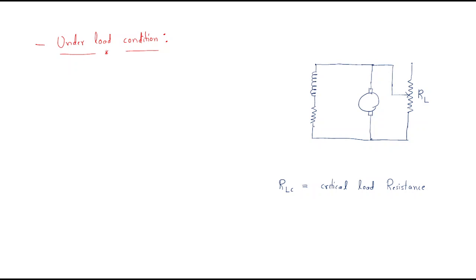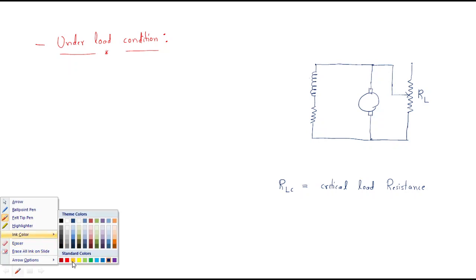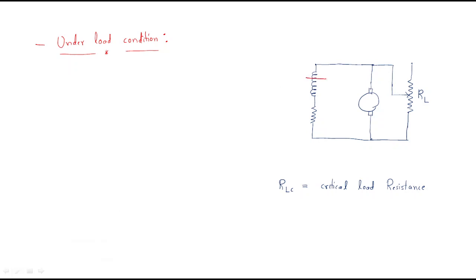When the generator has a rated flux, it produces some speed, and due to that speed the EMF will be generated. The generated EMF is applied back to the field resistance and also to the load.